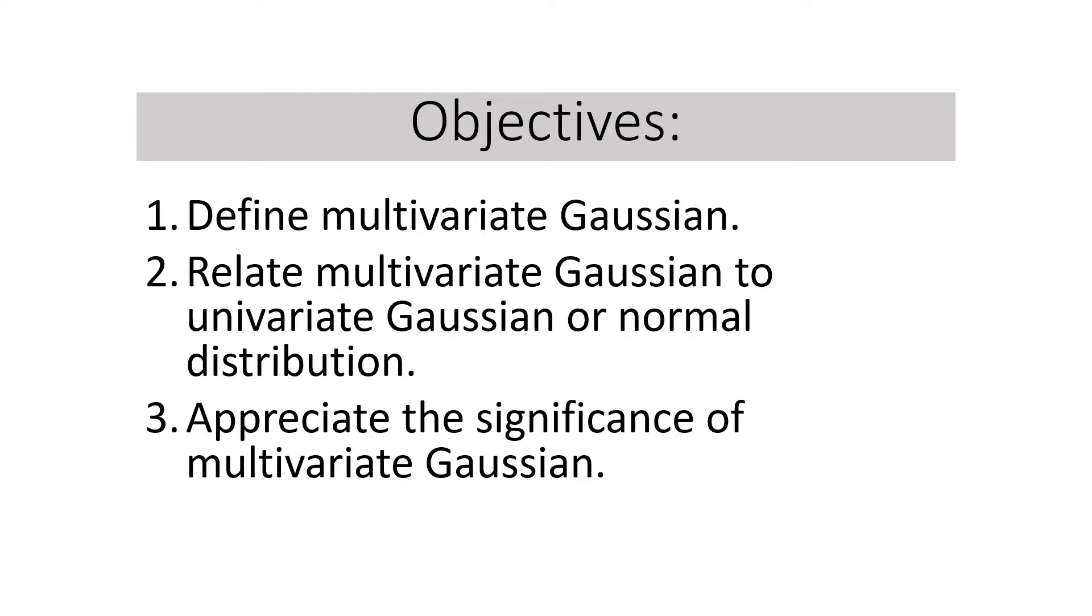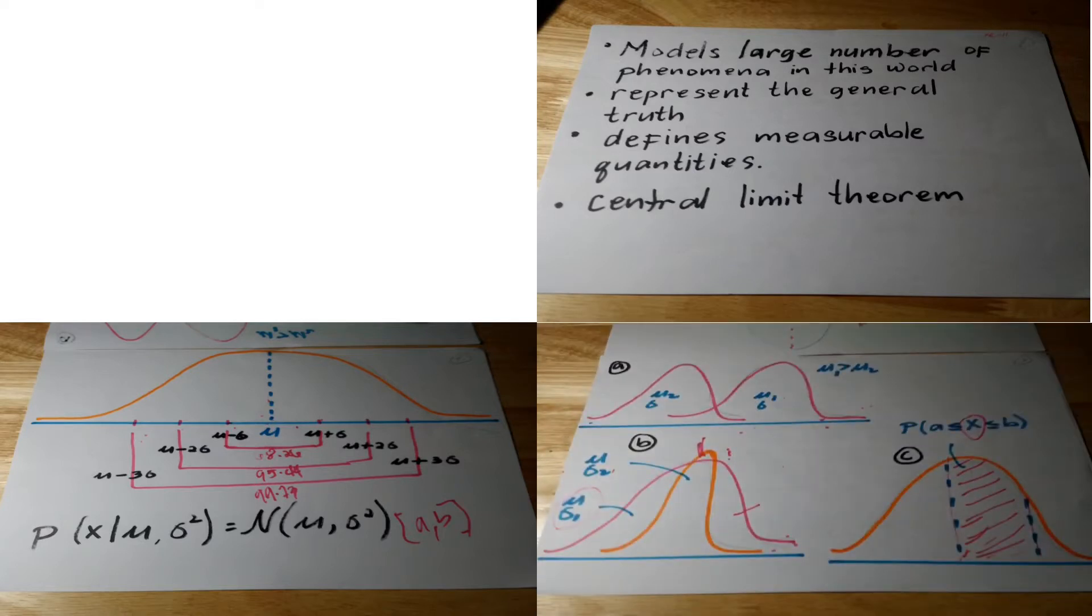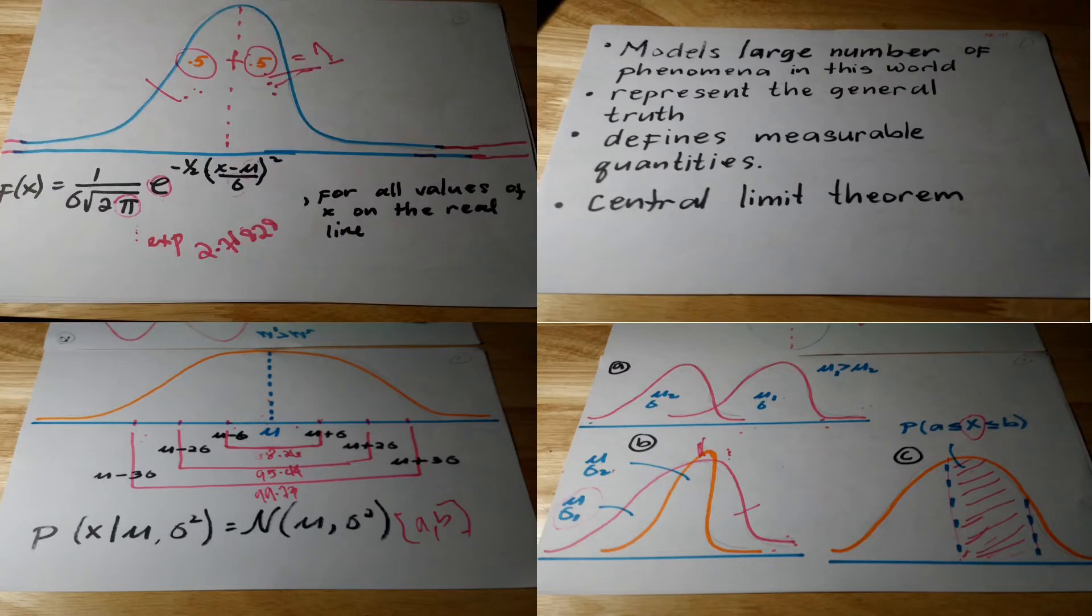and appreciate the significance of multivariate Gaussian. In our last lesson, we learned about analyzing Gaussian density function. We learned that Gaussian density function is used in all sciences because of the remarkable results, which are known as the central limit theorem. We noted that it represents the general truth because it defines measurable quantities. We also learned that it is symmetrical, its highest point can be found at the mean, and it is an entire family of normal probability distribution.